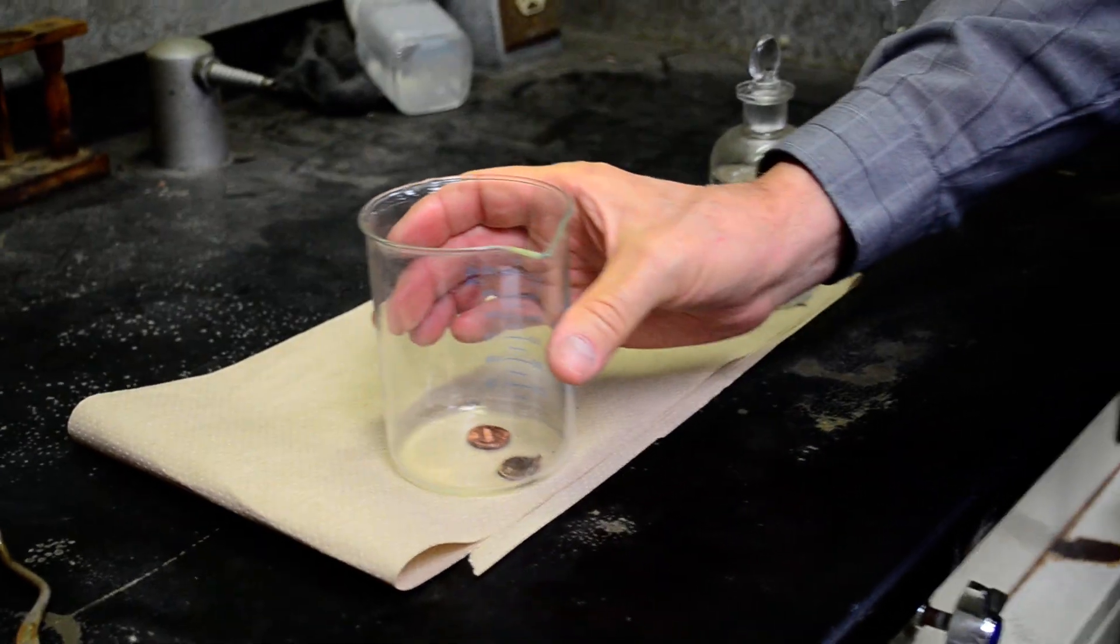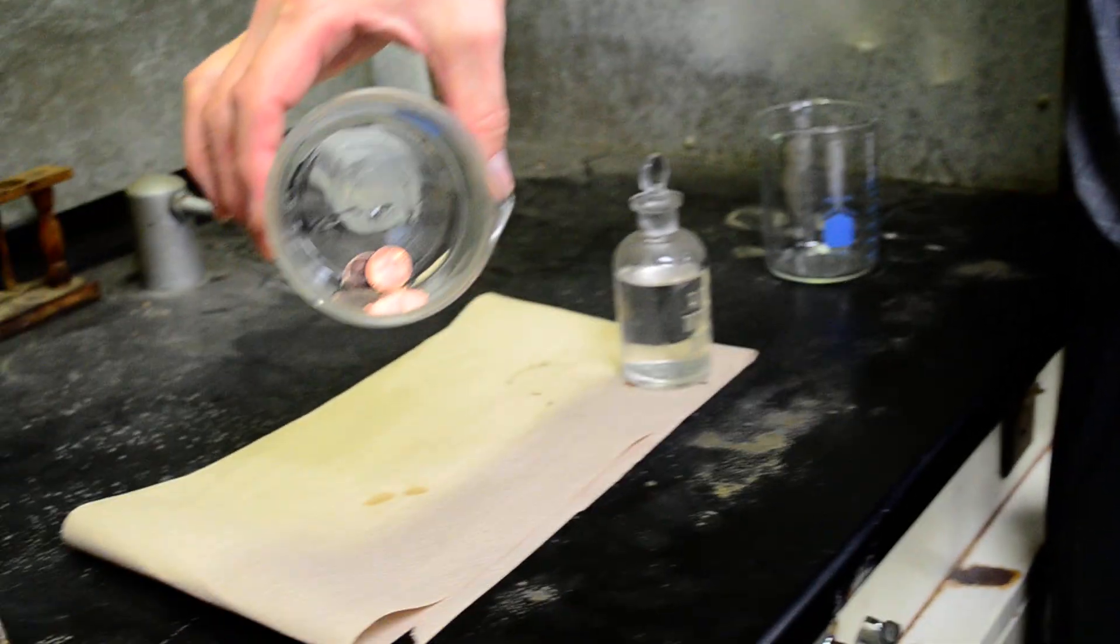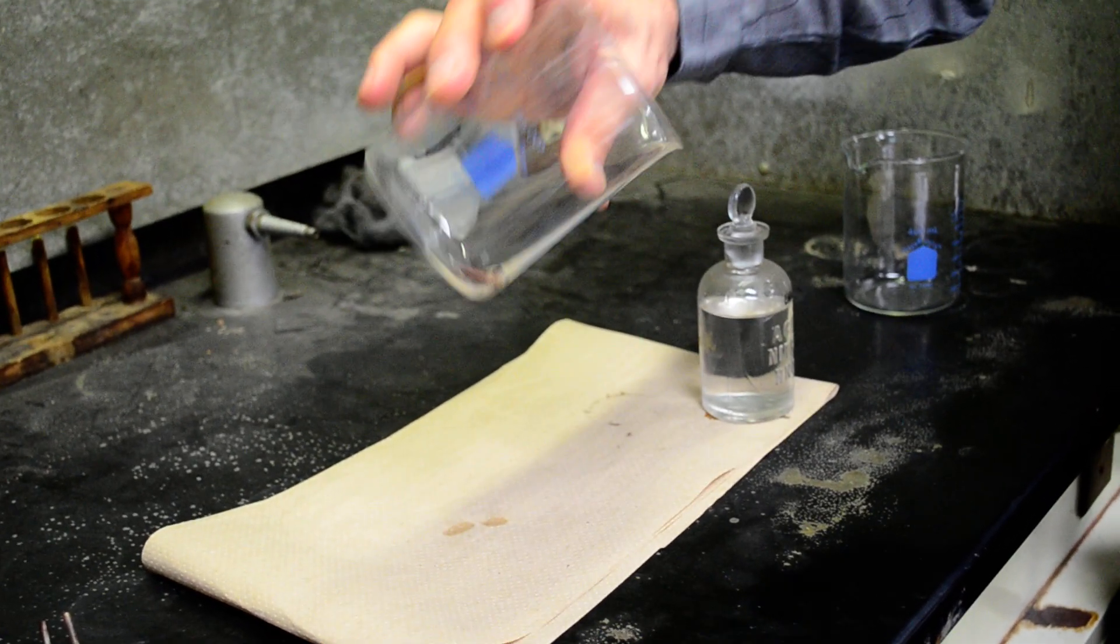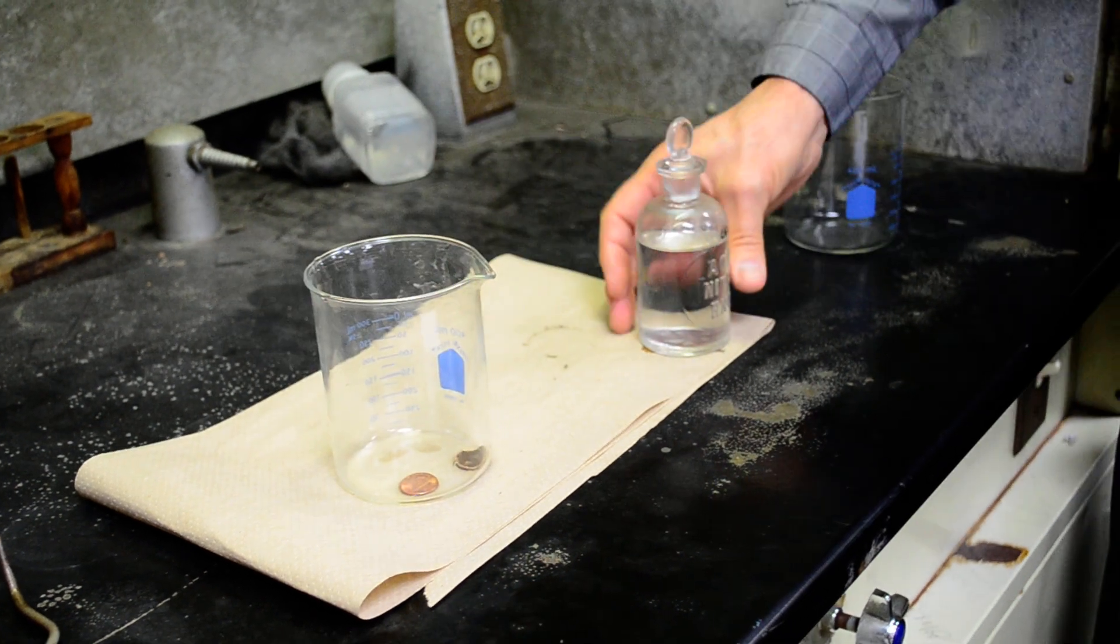What we're doing is we're going to take two pennies. One is pretty shiny and the other one is pretty corroded. I'm going to separate them here, and then I'm going to pour in some nitric acid.